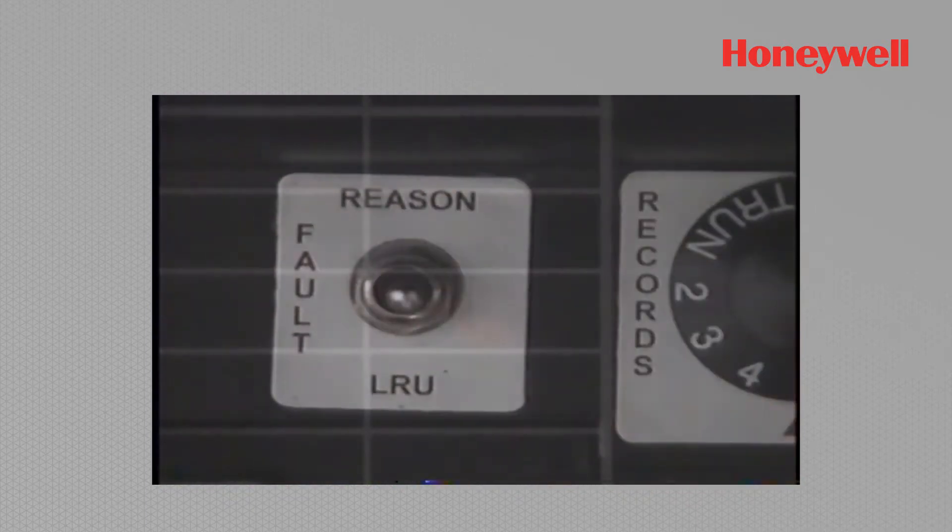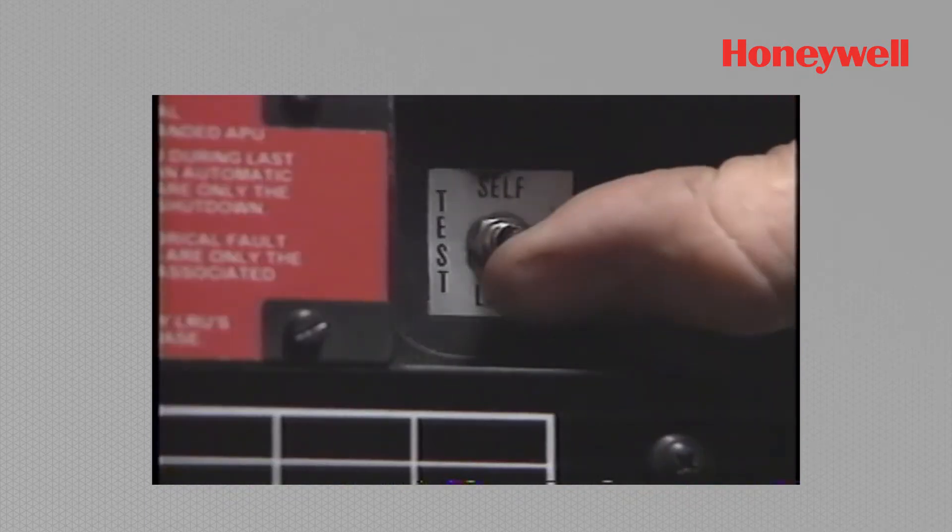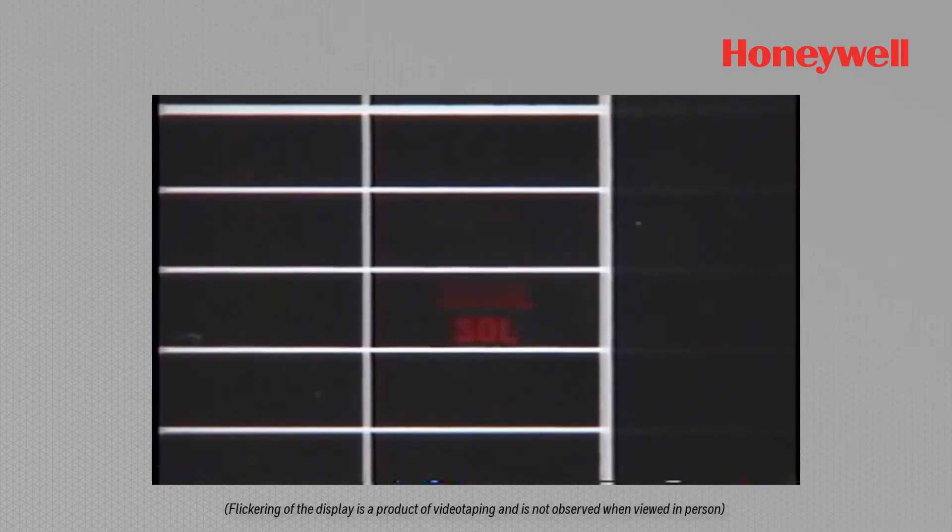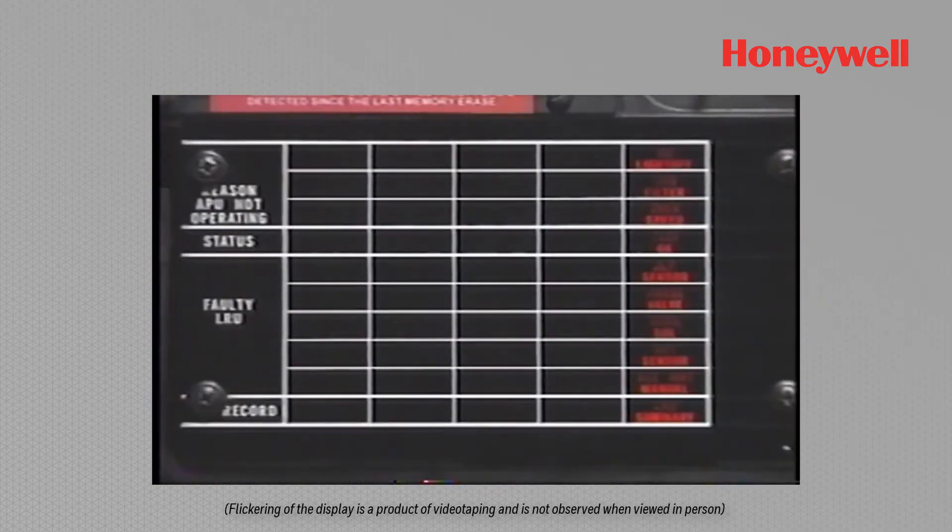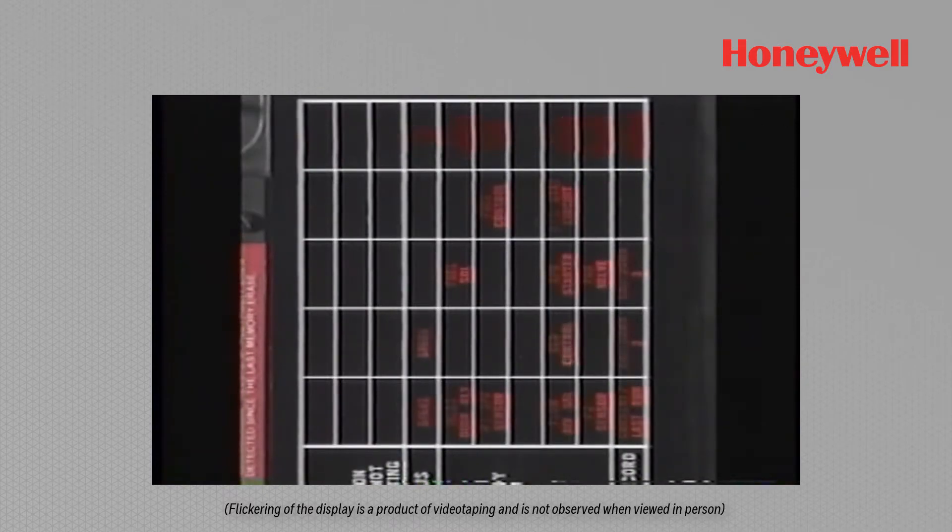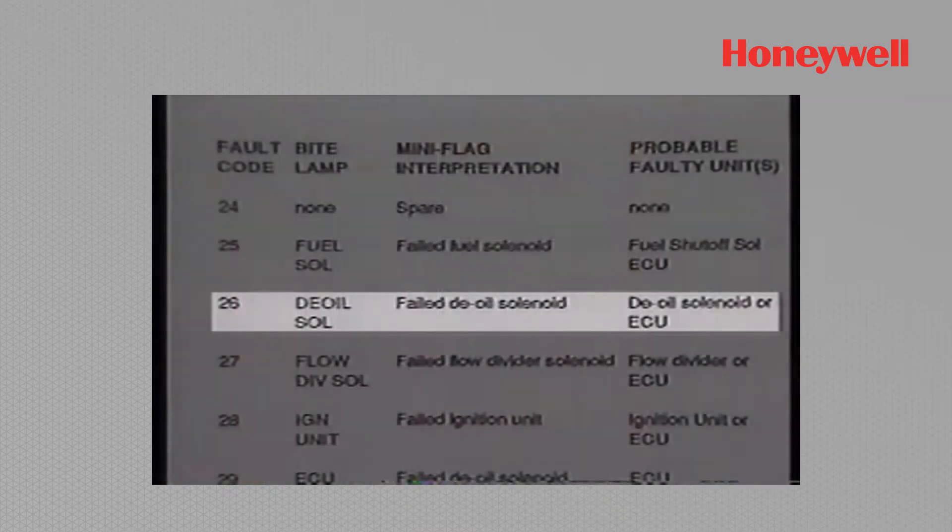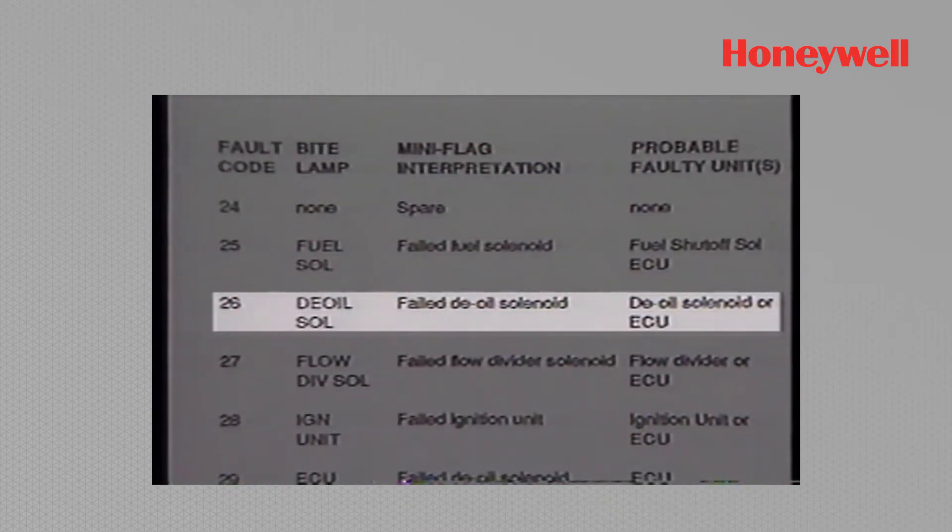For instance, maybe you have a shorted de-oil solenoid. If it's shorted and you replace the solenoid and the problem still exists, it's probably a wiring problem. This method of troubleshooting will assist you in repairing the APU system in the shortest time possible.